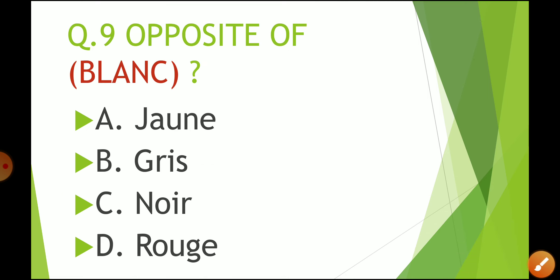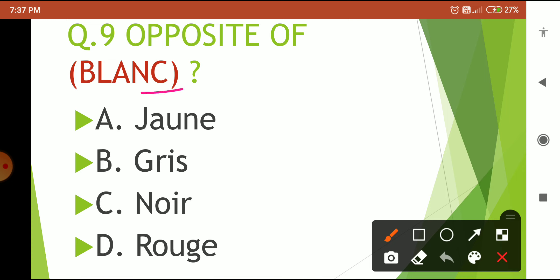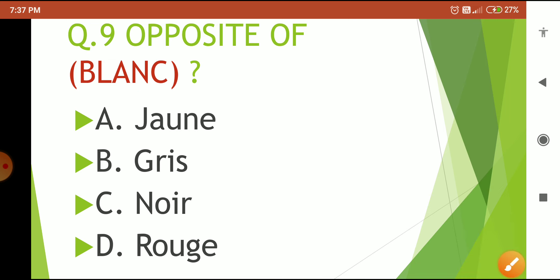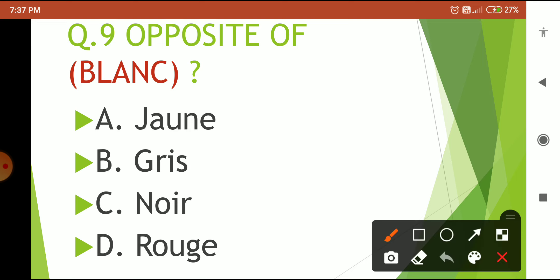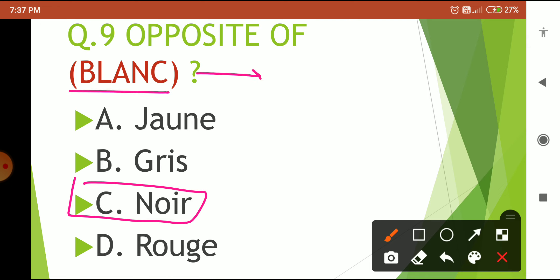Question number 9: opposite of 'blanc'. What is the opposite of 'blanc'? Options are: jaune, gris, noir, and rouge. Your 5-second countdown starts now. Time is over — the correct answer is option C: 'noir'. 'Blanc' means white and 'noir' means black, so black is the opposite of white.